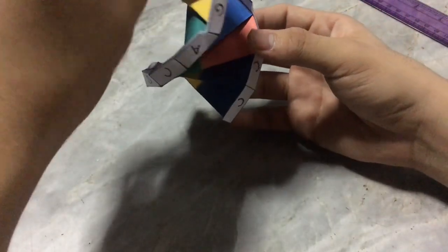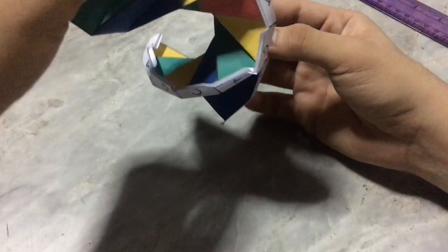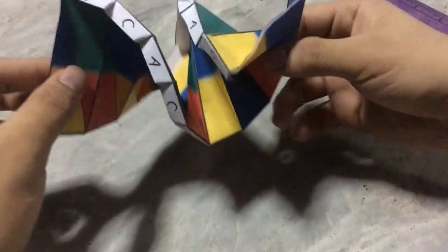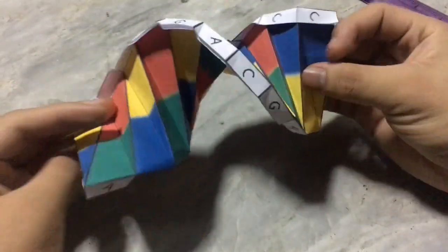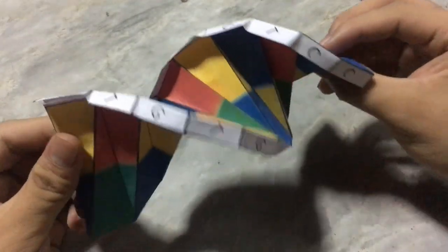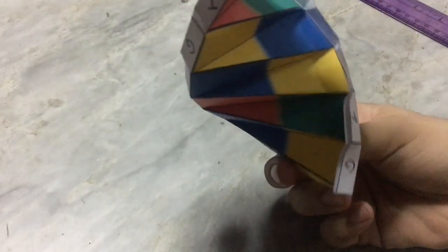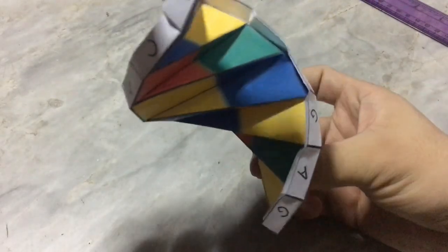So this is the structure of DNA represented by origami. The DNA has a double helix structure, much like a spiral staircase, as you can see.